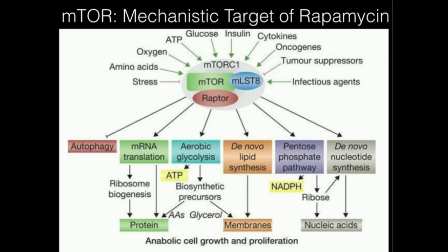Since the goal is cell growth and division, it makes sense that autophagy would be inhibited. Autophagy is when a cell decides to consume its own constituent parts and degrades its own internal environment. If your goal is growth, you want to inhibit that.